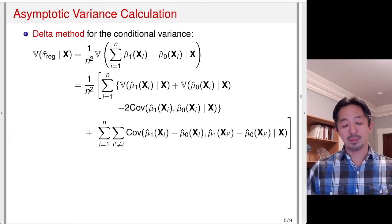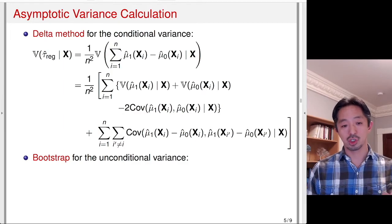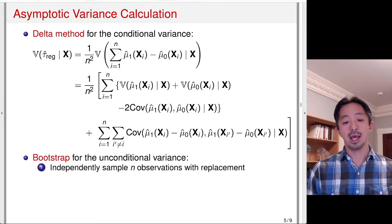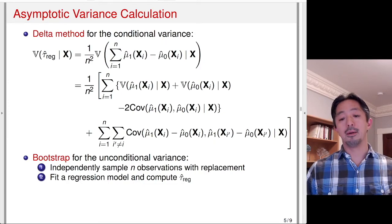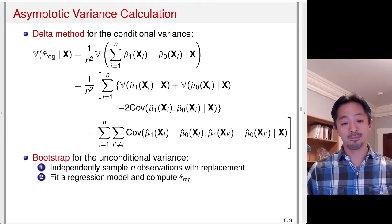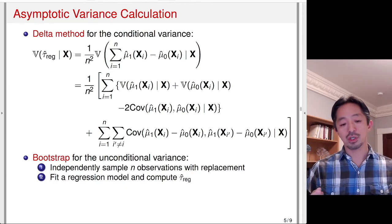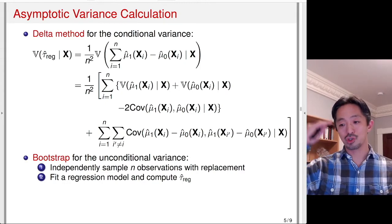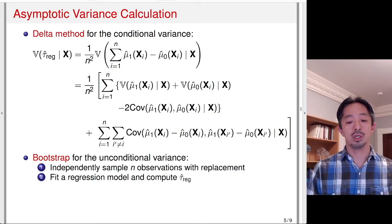There are two shortcuts people use. The first is bootstrap. Using bootstrap gives you the unconditional variance — instead of conditioning on X, you independently sample n observations with replacement, fit a regression model, compute the regression-based causal estimator, and repeat. This process is quite computationally intensive because for every iteration you have to fit the regression model and compute the quantity of interest.